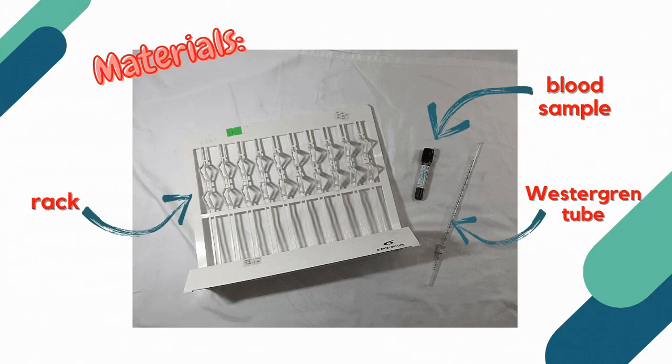The following materials will be needed for the procedure. First, we have the rack. Next, our patient's blood sample. Preferably, a blood sample that is anticoagulated with 3.8% sodium citrate. And lastly, we have the Westergren tube.